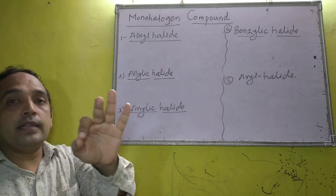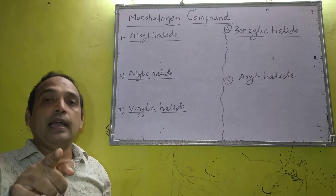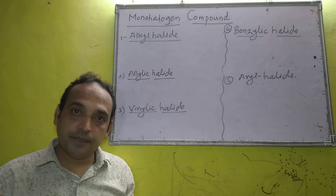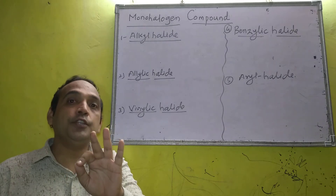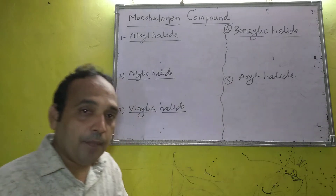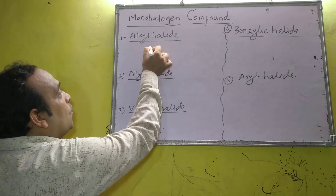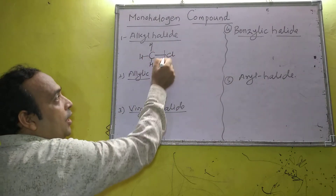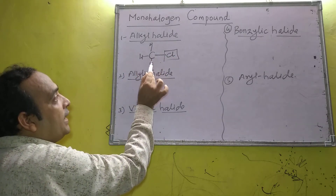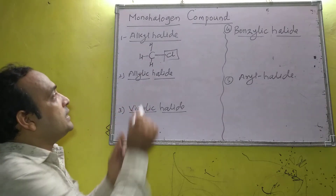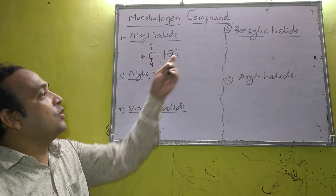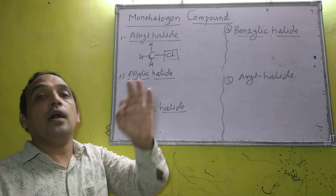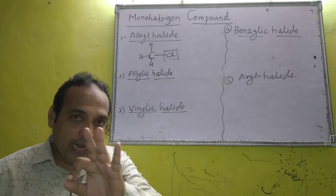In alkyl halides, the halogen atom is attached to an SP3 hybridized carbon atom. For example, methyl chloride CH3Cl — all valences are satisfied by single bonds, so this carbon is SP3 hybridized. Halogen atom attached to SP3 hybridized carbon is called alkyl halides or haloalkanes.